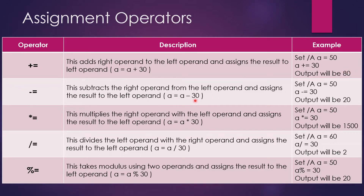Similarly, minus-equal-to means a equals a minus 30. A is 50, so 50 minus 30 is 20. For multiply-equal-to, a equals a into 30 — a is 50, so 50 into 30 is 1500. For division, a is 60, so 60 divided by 30 equals 2. For modulus, a is 50, so 50 modulus 30 — remainder is 20 — the answer is 20. That is how assignment operators work.